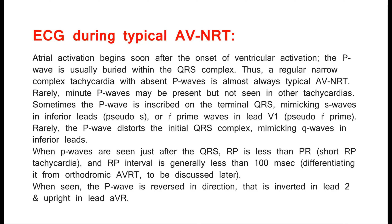Rarely, minute P-waves may be present. Sometimes the P-wave is inscribed on the terminal QRS, mimicking S-waves in inferior leads (pseudo-S) or R'-waves in lead V1 (pseudo-R'). Rarely, the P-wave distorts the initial QRS complex, mimicking Q-waves in inferior leads. When P-waves are seen just after the QRS, RP is less than PR — short RP tachycardia — and the RP interval is generally less than 100 ms, differentiating it from orthodromic AVRT.